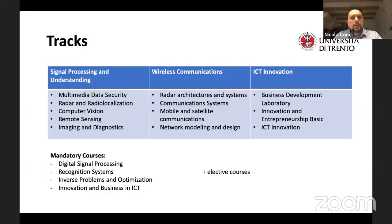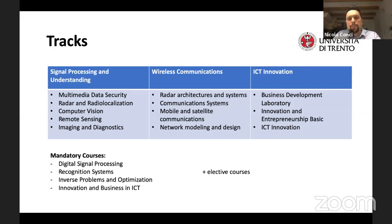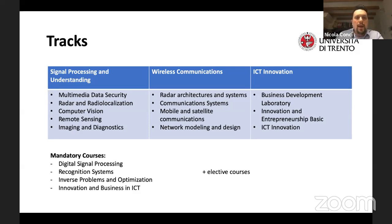The signal processing and understanding track includes courses in multimedia data security, radar and radio localization, computer vision, remote sensing, and imaging and diagnostics. The wireless communication track covers networking and wireless communication problems: radar, communication systems, mobile and satellite, and network modeling and design. The ICT Innovation branch matches the EIT profile, with courses on how to develop a business and bring innovation to create products. Mandatory courses across all programs include digital signal processing, recognition systems, inverse problems, and innovation and business in ICT.